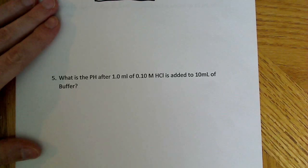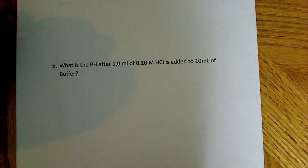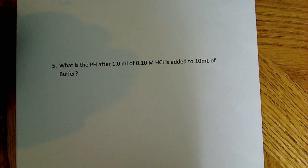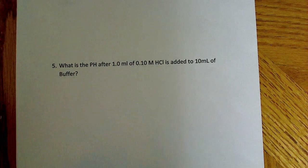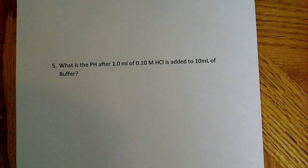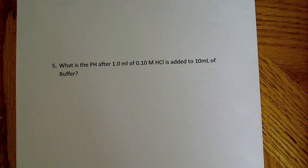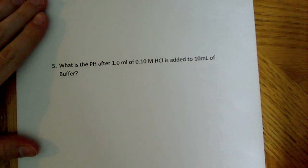So now that we have that problem under our belt, let's go to the next one. It says, what is the pH after 1 milliliter of 0.1 mole HCl is added to 10 milliliters of buffer? Well, this will take a little bit more to solve.